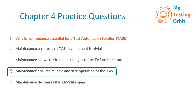Option A is incorrect because maintenance does not make development trivial; rather, it helps ensure that the TAS remains effective over time. Option B is misleading as it suggests that maintenance leads to frequent changes in the TAS architecture, which is incorrect.